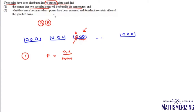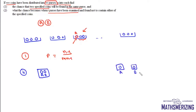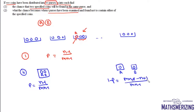For Part 2, we find the probability when r purses have been examined and found not to contain either of the specific coins. There are two cases: Case 1 — both coins are together, with probability (n-1)/(m(n-1)); Case 2 — they are in separate purses, with probability 1 minus that, which simplifies to n(m-1) / (m(n-1)).